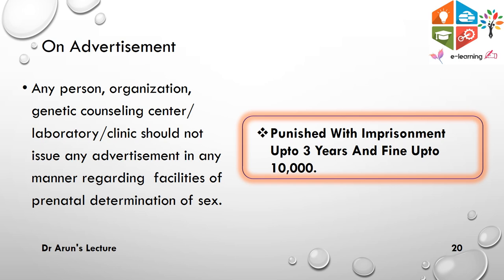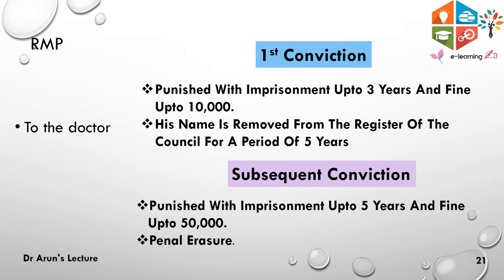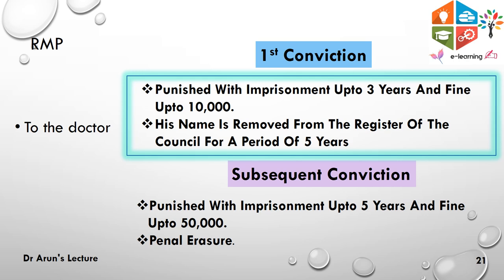Regarding punishment for offenses relating to advertisement: any person, organization, genetic counseling center, laboratory, or clinic must not make any announcement or advertisement regarding facilities for prenatal determination of sex. In case of a breach, the person will be punished with imprisonment up to 3 years and a fine up to 10,000 rupees on the first conviction, and his name will be removed from the register for a period of 5 years.